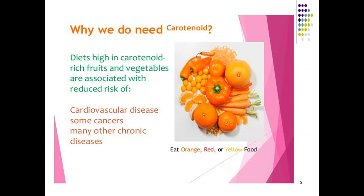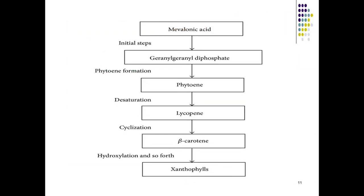Why do we need carotenoids? A diet high in carotenoid-rich foods and vegetables is associated with a reduced risk of serious diseases, including some cancers and chronic diseases. Oranges and lemons both contain carotenoids with their yellow pigment, and they are also used as immune system boosters.